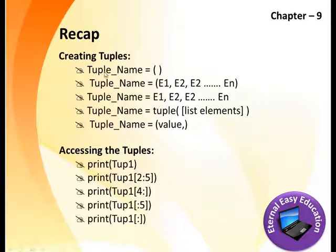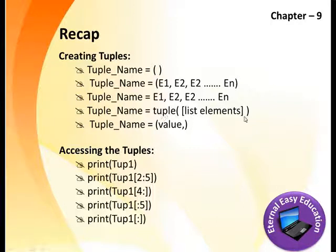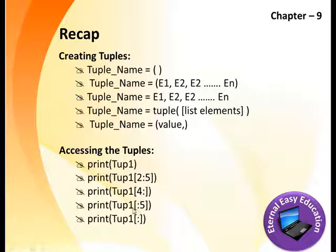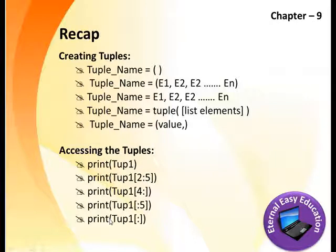Recap: Creating a tuple — empty parentheses for an empty tuple, with elements in parentheses, without parentheses, or using the tuple() function with a list. We can also have a single-element singleton tuple. Accessing tuples — print the whole tuple, a particular index value, a start-to-end slice, or use default start/end. tuple1[:] within square brackets prints the whole list. These are the key points regarding creating and accessing elements in a tuple. Thank you, have a good day.